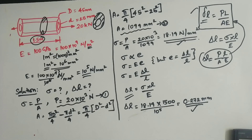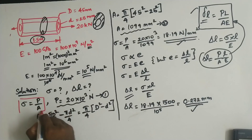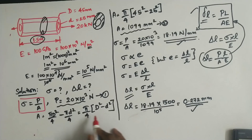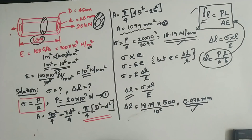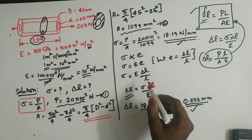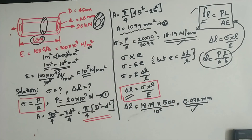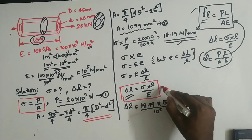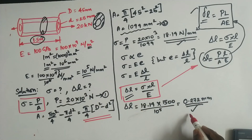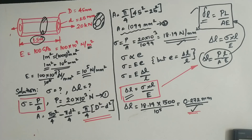To summarize: use stress equals load by area for the cross-section area of a circular shaft or rod, and use delta L equals sigma L by E for the change in length. Using these formulas will give the same result. If you found this video helpful, please subscribe and share, and see you in the next video.